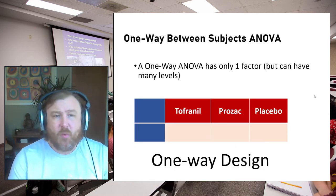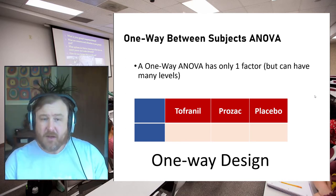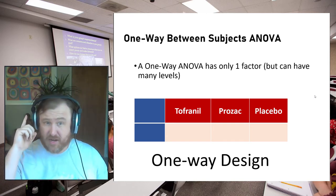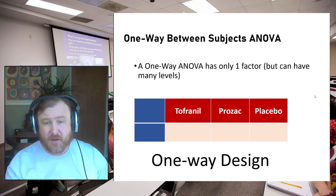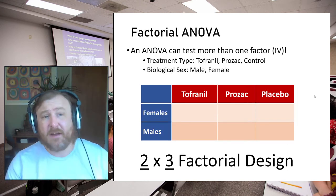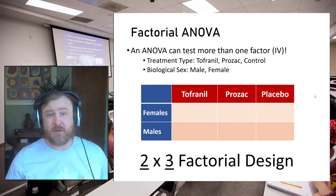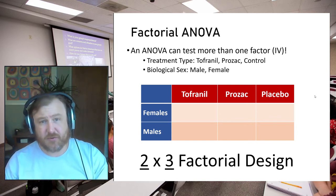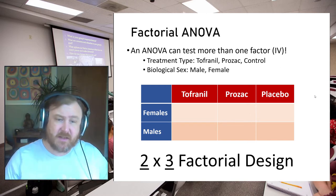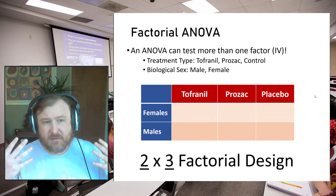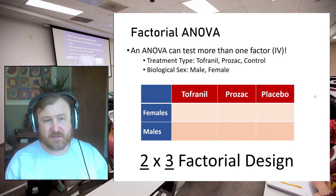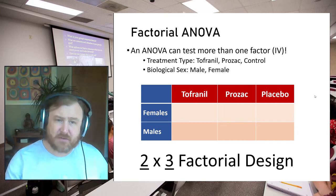A one-way between-subjects ANOVA only has one factor, but that one factor or independent variable can have many different levels. So in a one-way design, which by definition has one independent variable, you can have three different groups. However, in a factorial ANOVA, we can have more than one factor. If we wanted to look at the effects of three different treatment types across biological sex, we would have a two-by-three factorial design.